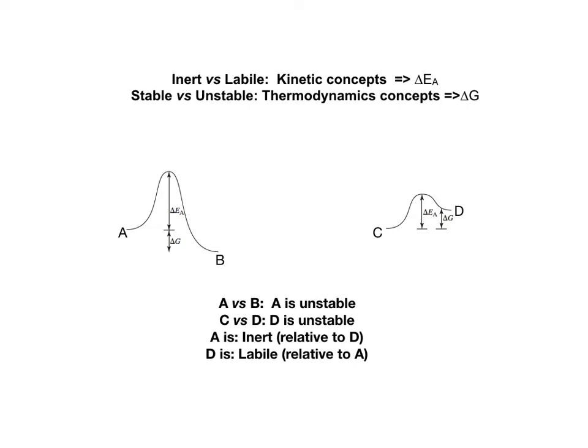Labile and inert are kinetic concepts related to the activation barrier. Stable and unstable are related to thermodynamics — they have nothing to do with the activation barrier or how fast things change.